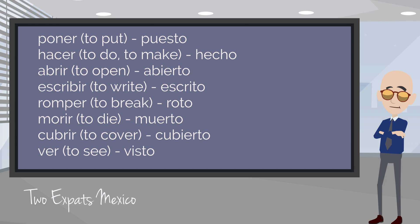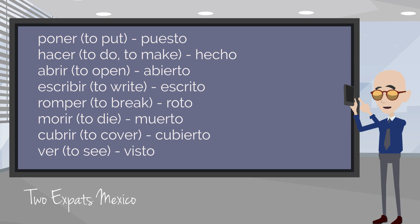If every verb in Spanish followed these rules, life would be easy. But as we know, life's not always easy. There are irregular verbs, meaning they're going to have a different past participle. Here's a list of the very common ones you're likely to see. The thing with irregular verb conjugations is you just have to learn them one at a time. I encourage you to take a screenshot or write these down so you can study them later.